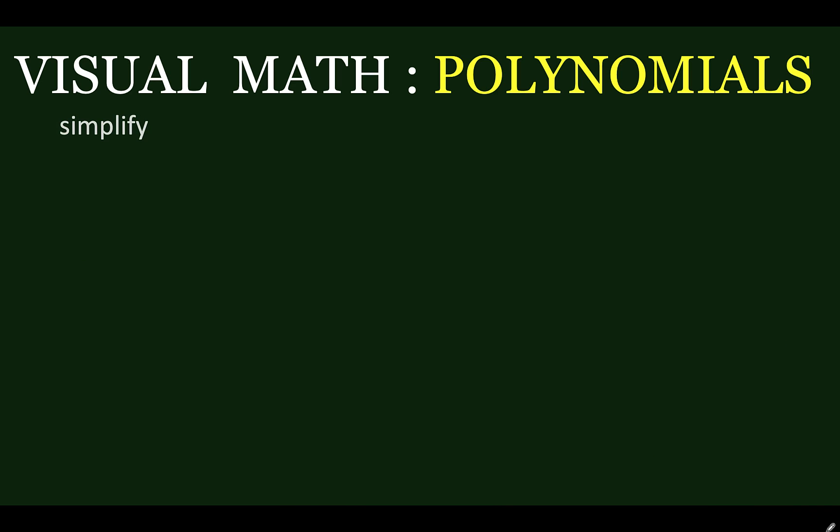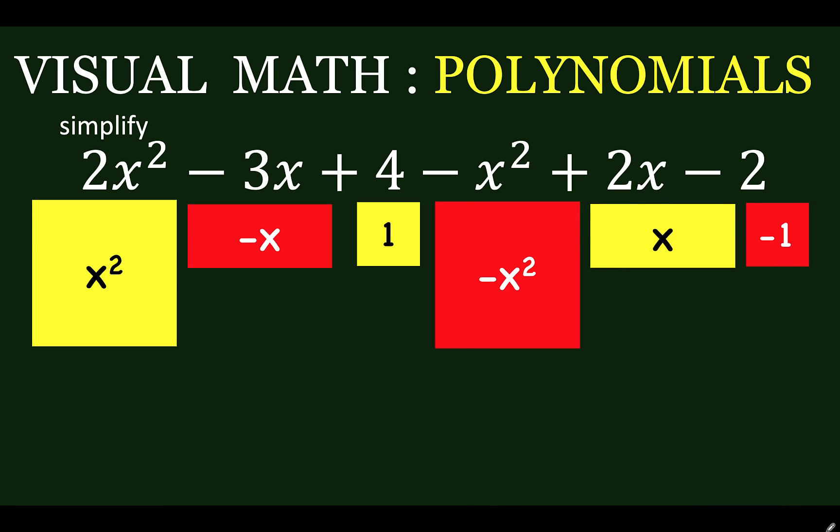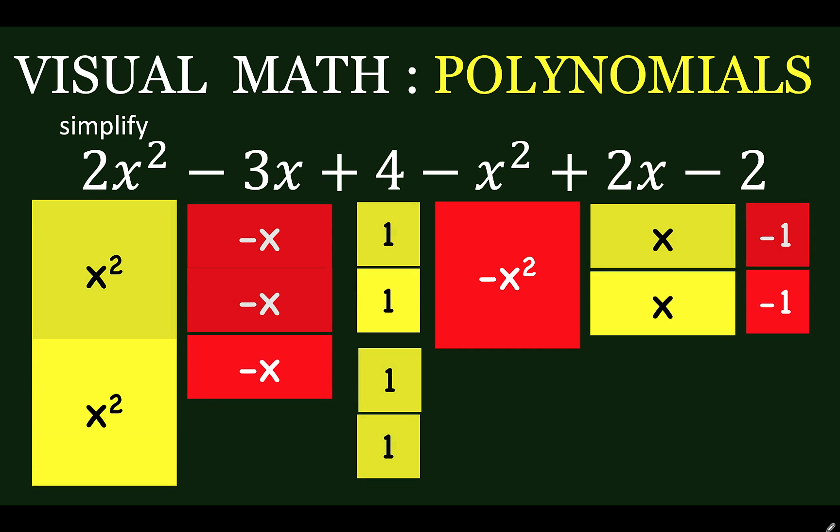So if the problem is to simplify 2x squared minus 3x plus 4 minus x squared plus 2x minus 2, we begin with the base shapes and replicate them as necessary.